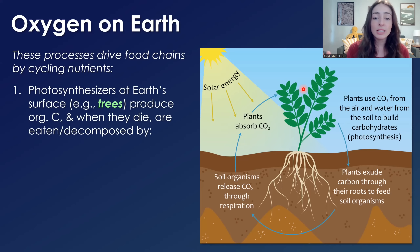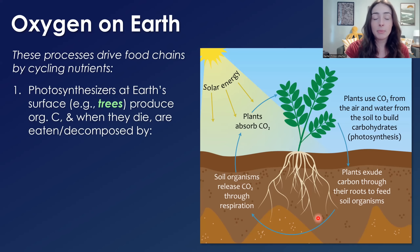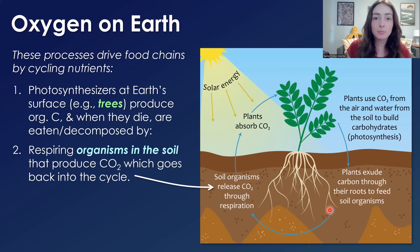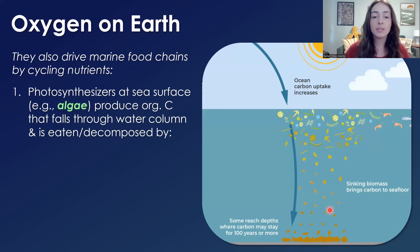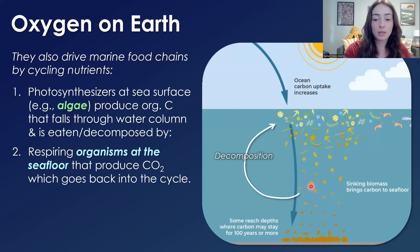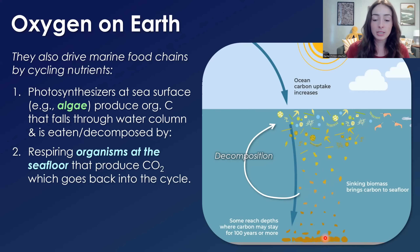On land, this typically looks like trees and other plants at the surface producing organic carbon, which when they die is eaten and decomposed by soil microbes and other organisms, producing carbon dioxide that goes back into the cycle. This also happens in oceans, where photosynthesizers at the sea surface, like algae or cyanobacterial blooms, produce organic carbon that falls through the water column and is eaten and decomposed either within the water column or on the seafloor by respiring organisms — fish in the water column or microorganisms at the seafloor — which decompose that organic carbon and produce CO2.